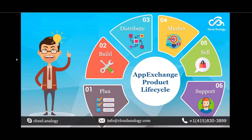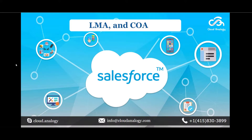Now let us move forward with the webinar. My topic is LMA and COA. LMA stands for License Management App and COA stands for Channel Order Application. The License Management Application comes in when you need to provide support. LMA keeps records on installs and licenses and provides basic tools that help you support your customers. It manages your licenses, your installations, and your leads who have installed the app.